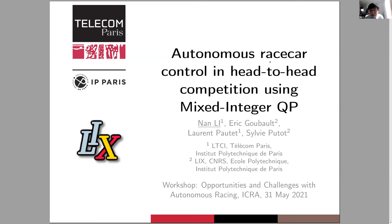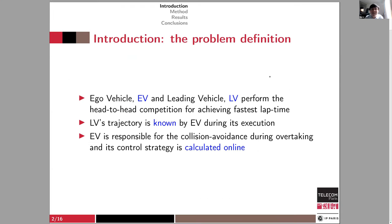Hello everyone, I'm Nan from Telecom Paris, Institut Polytechnique Paris. Today I would like to introduce my work on autonomous race car control. We assume there are two vehicles — an ego vehicle and a leading vehicle — on the racing track for a head-to-head competition. The ego vehicle knows about the leading vehicle's trajectory, and the ego vehicle is responsible for avoiding potential collisions. There is an existing work which proposed a special vehicle and MPC method using a curvilinear coordinate system where the vehicle's mass has a projection point on the center line.